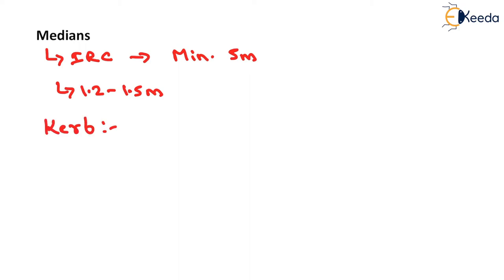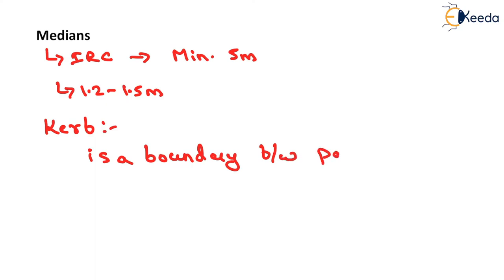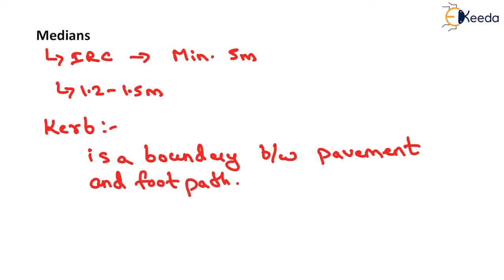The next element is the curb. A curb is a boundary between the pavement and footpath. It provides lateral support to the pavement, and the color of the curb is generally black and white, or yellow and white, which is provided along the side of roads.